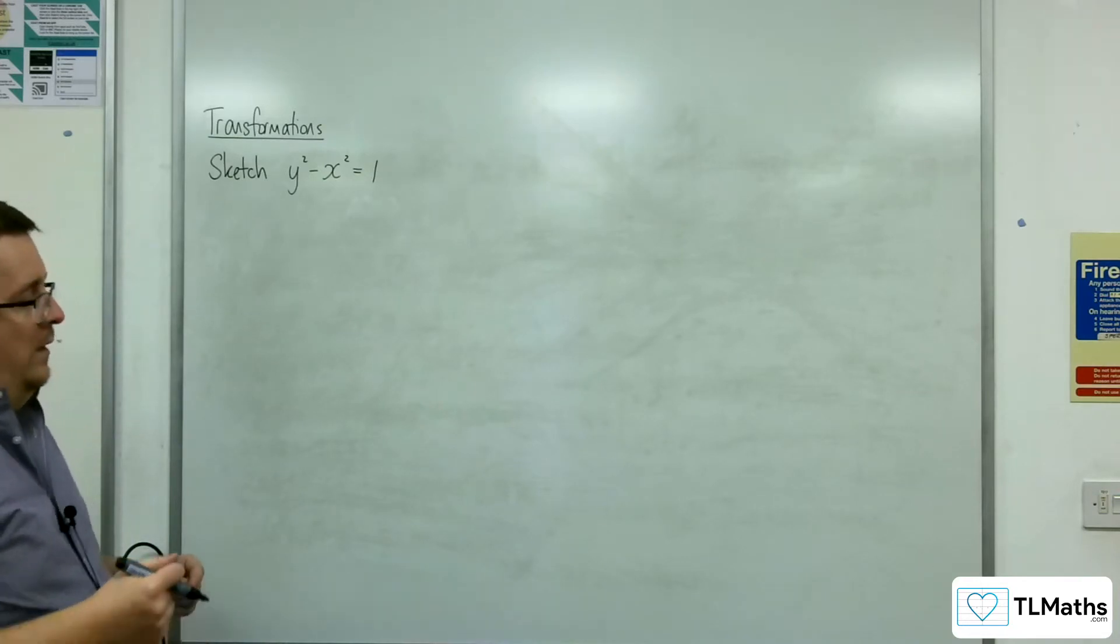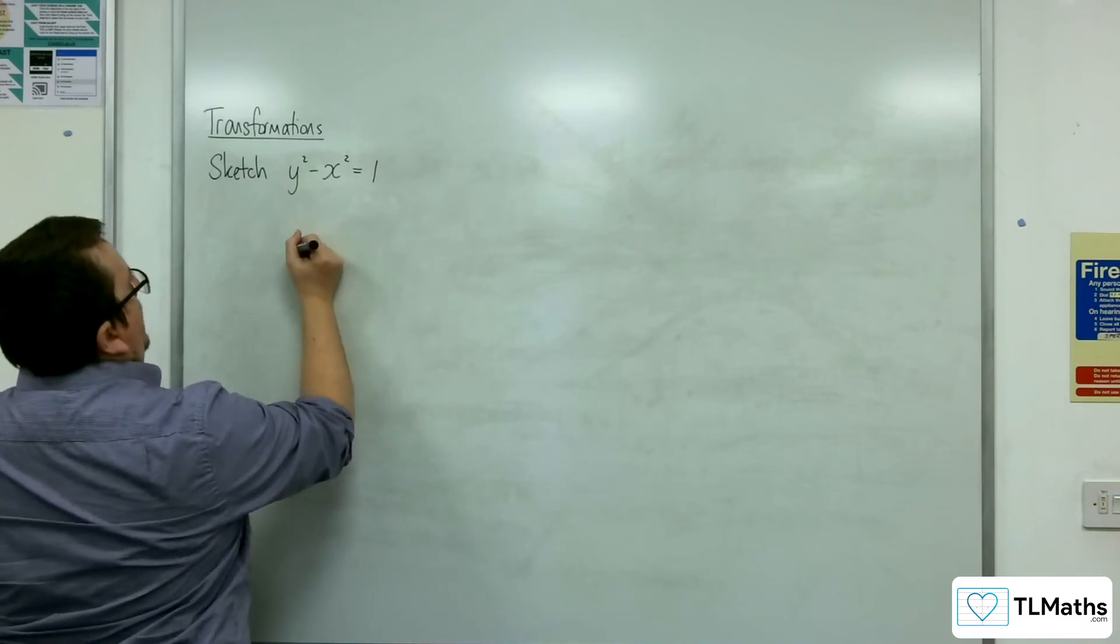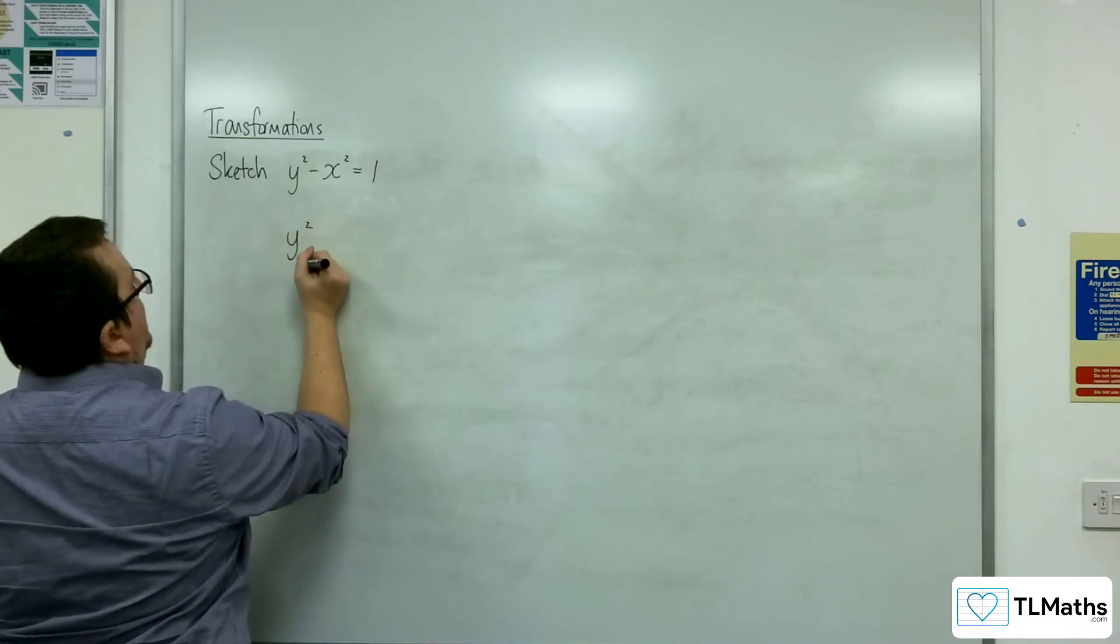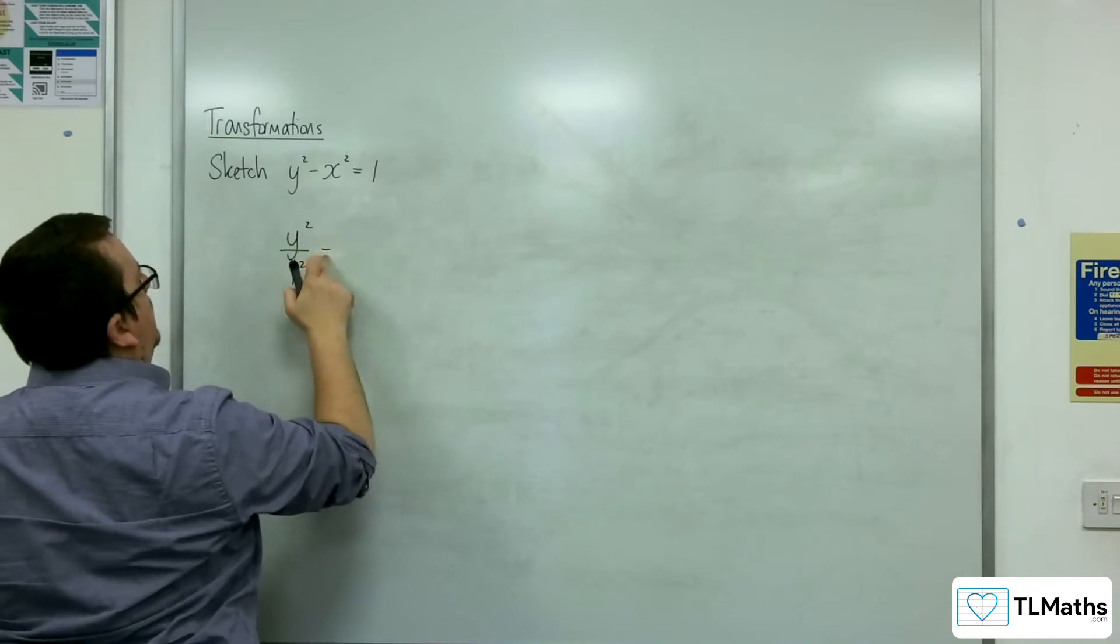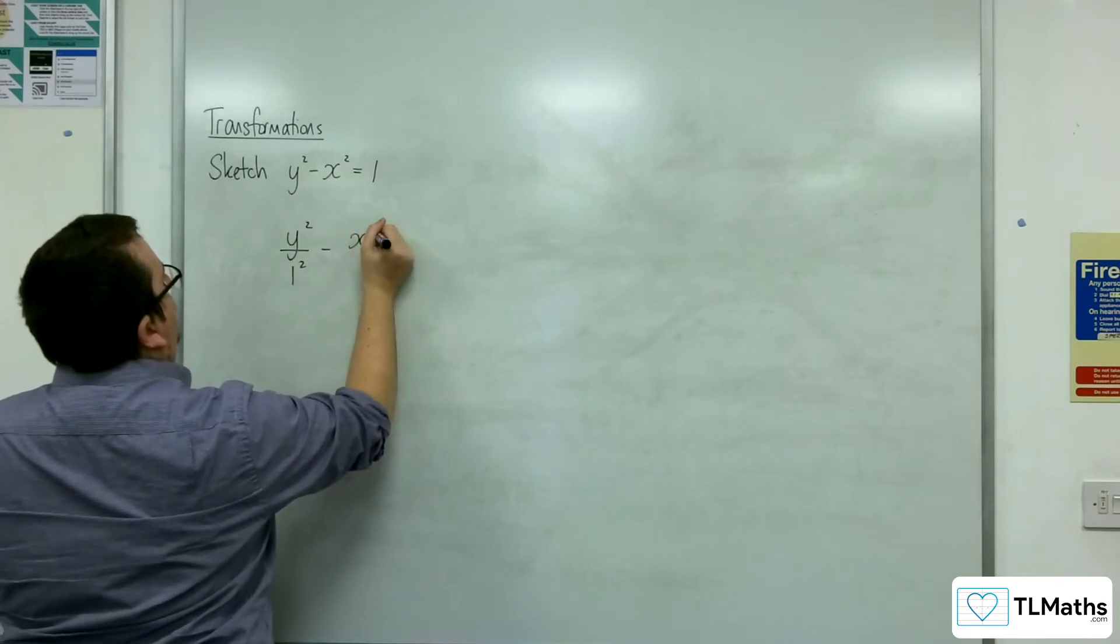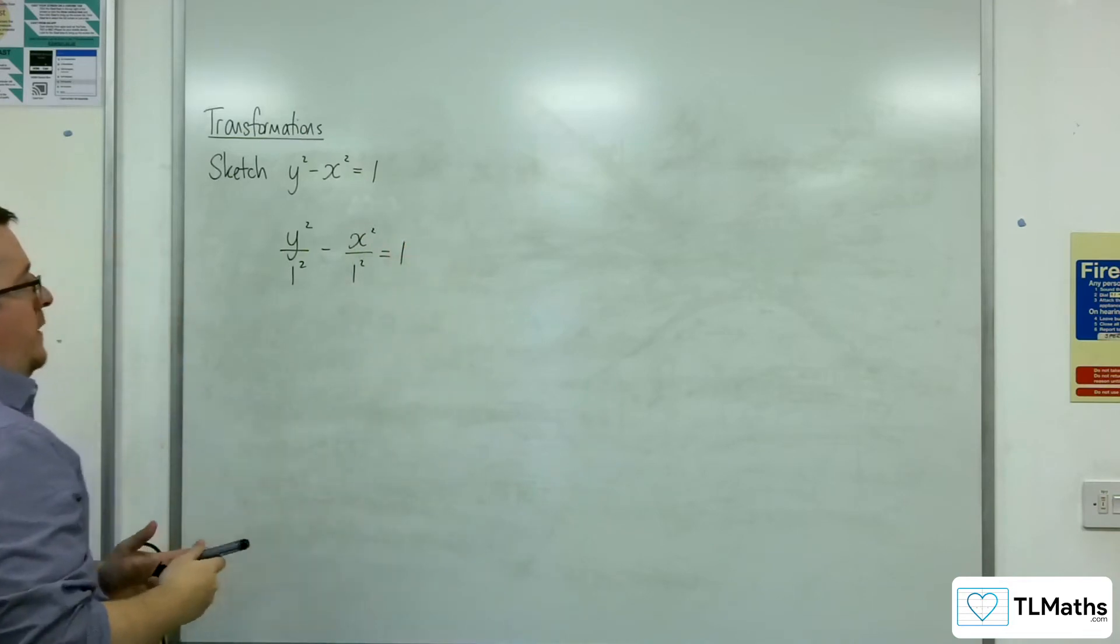Now, with that, we would have y squared over 1 squared, take away x squared over 1 squared equals 1.